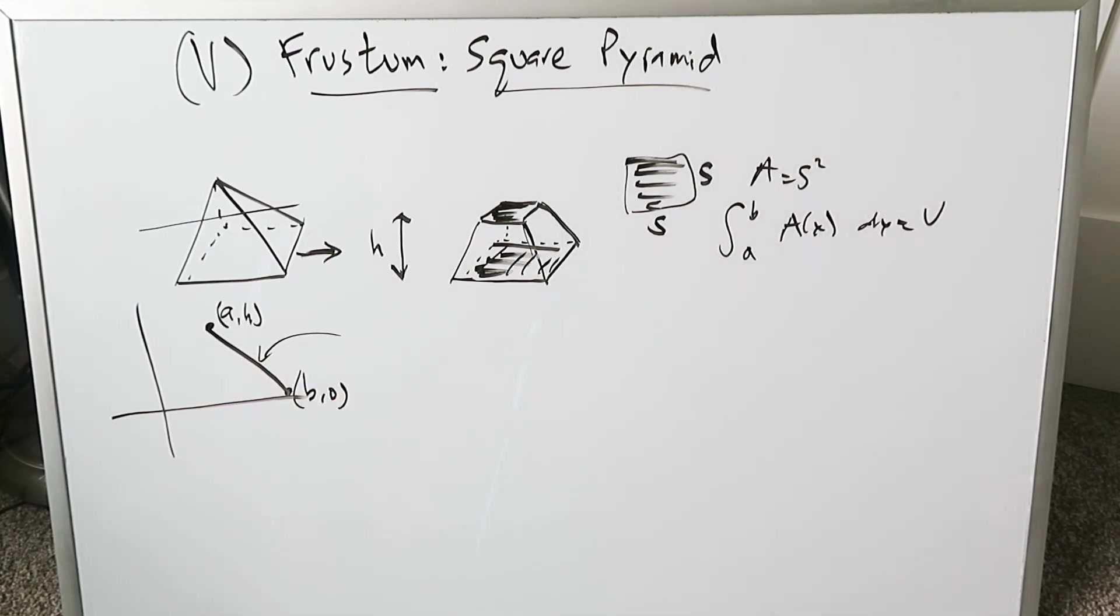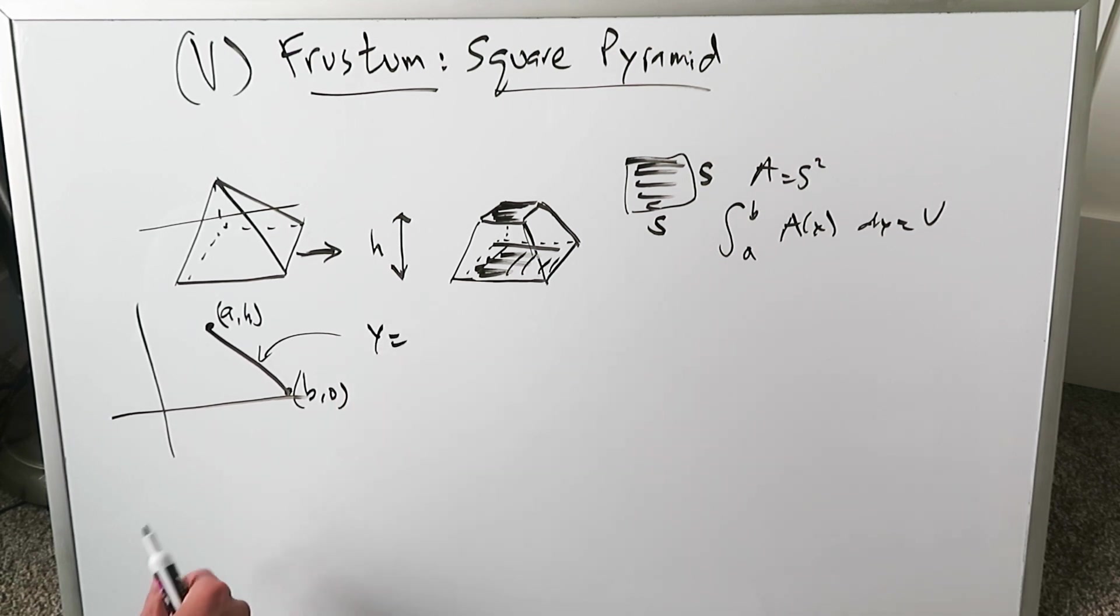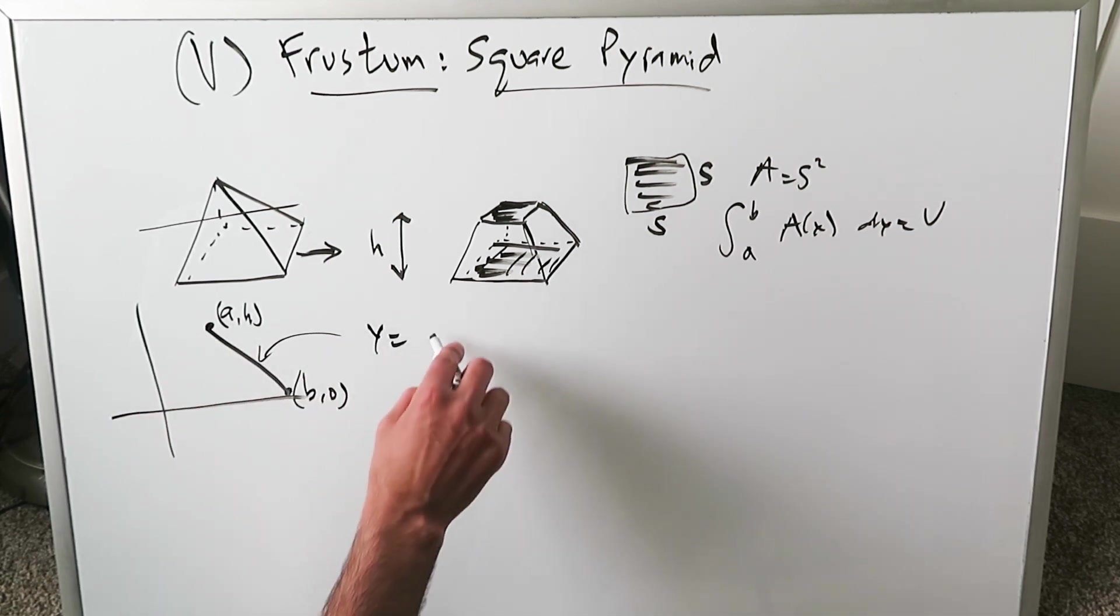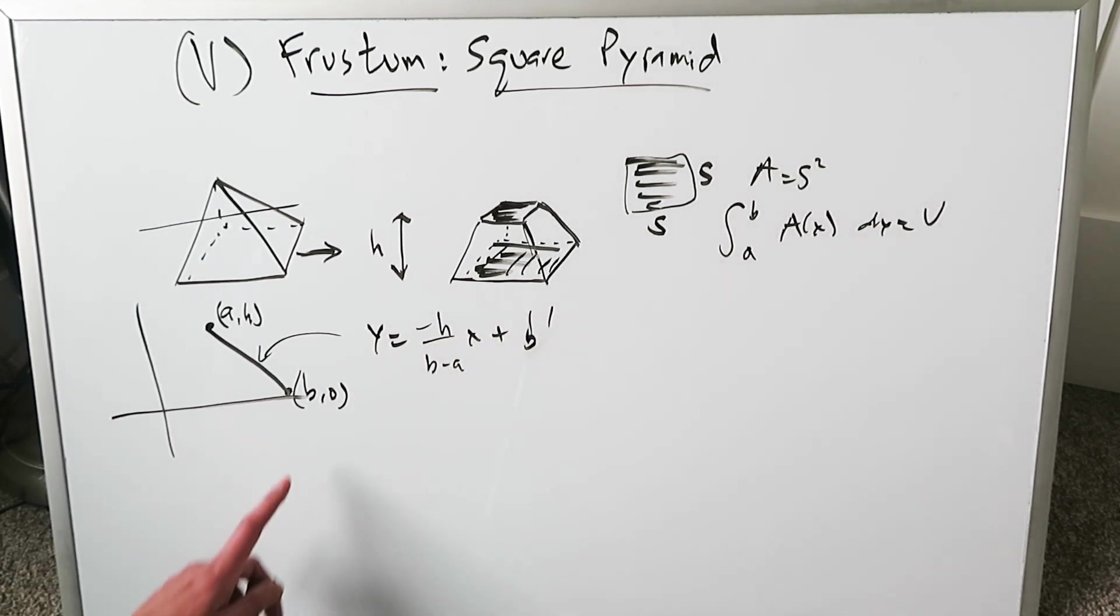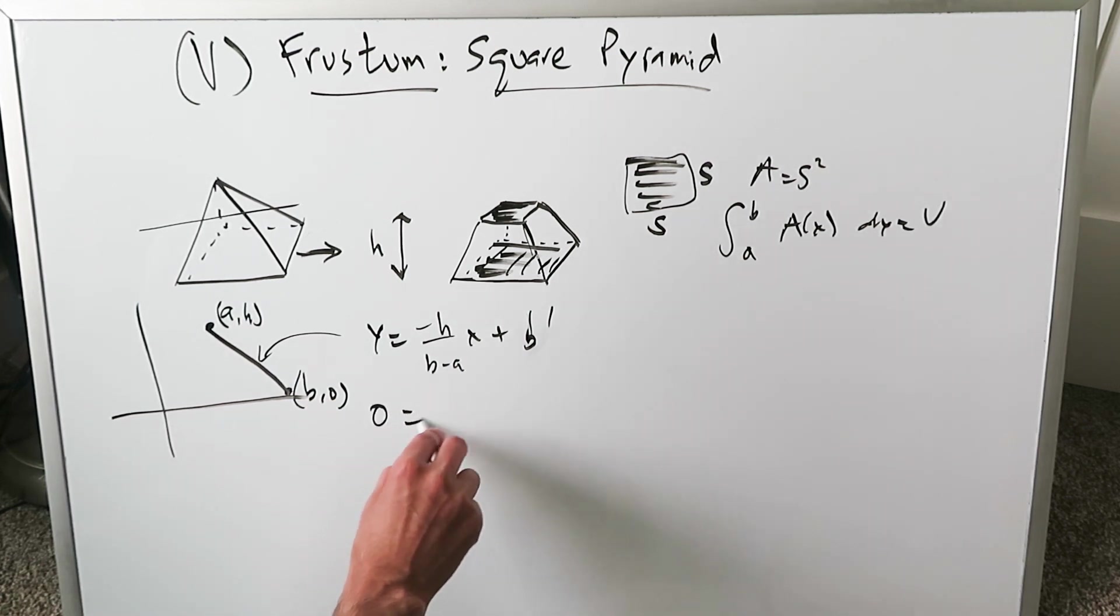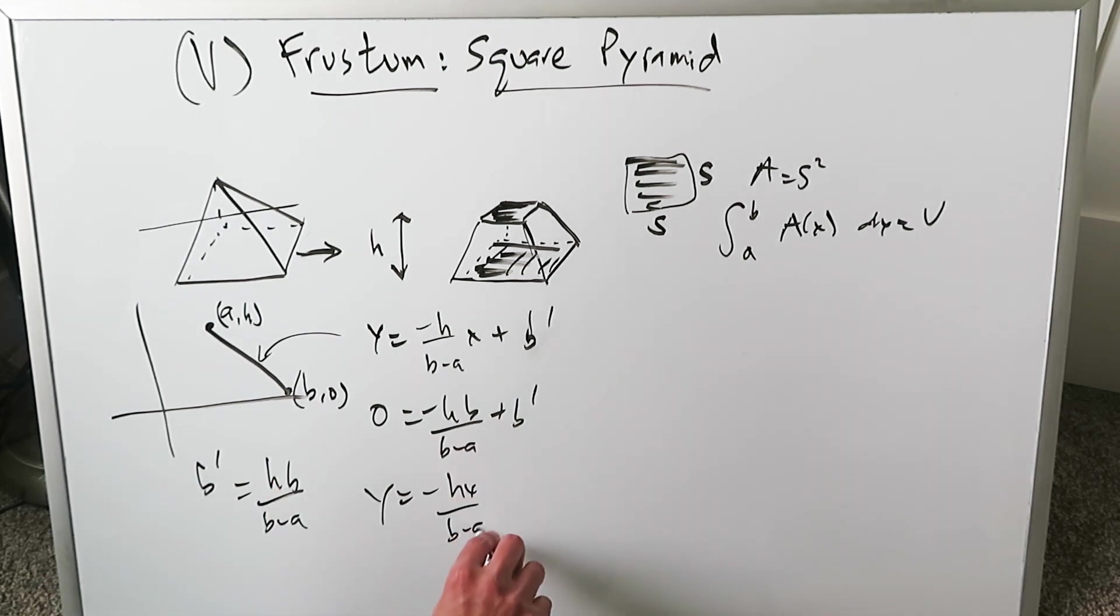You need to determine the formula of this line. Remember, no rotation, we're looking only at slices. Y equals, you have to determine the slope. It's a downward sloping line: minus H over B minus A, times X plus Y intercept B prime. Using the point (B, 0): 0 equals minus HB over B minus A plus the Y intercept. The Y intercept equals HB over B minus A. So Y equals minus HX over B minus A plus HB divided by B minus A.